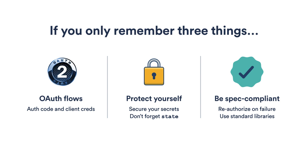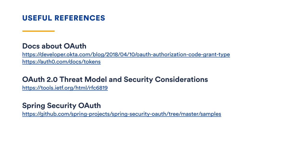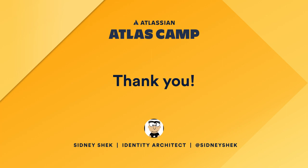And as part of that, remember if you ever see failure cases like unauthorized errors, just kick off another authorization flow for the user. To help you do that, use standard libraries — there's one out there for every single tech stack. I've listed a few useful references here. I particularly like the RFC for the OAuth 2 threat model — there are a lot of interesting attacks there to bear in mind. And on that note, thank you very much for listening.